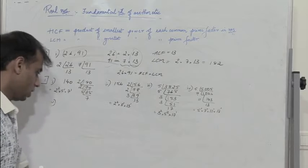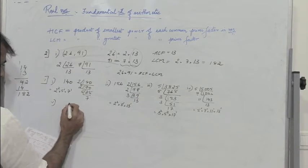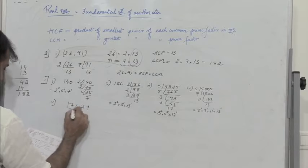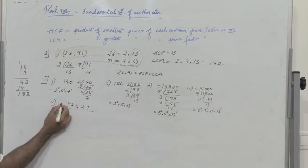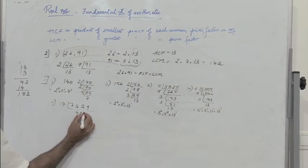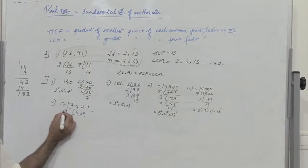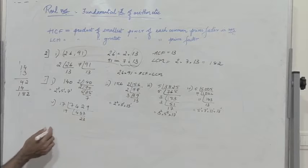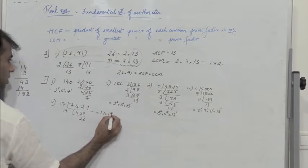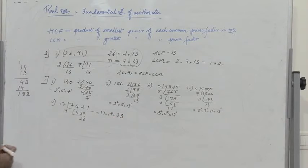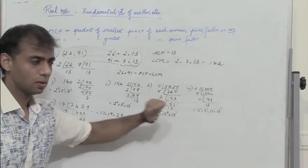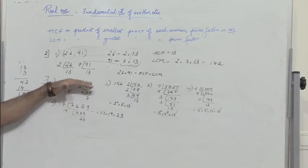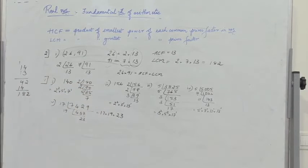The last one: 7429. Dividing by 17 gives 437, by 19 gives 23. So 7429 = 17 × 19 × 23. So in problem 1, we have represented all numbers in terms of their prime powers. To do that, we divide the given number by prime numbers only.